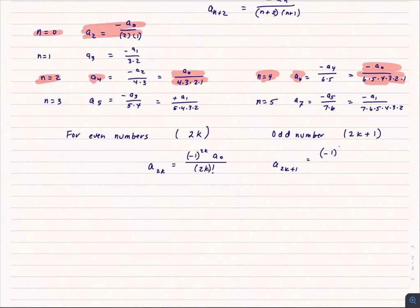So that means y_k is equal to a_0, the summation from, let's switch to k, so we're not mixing up our n's. So k equals 0 to infinity, negative 1 to the 2k, x to the 2k, divided by 2k factorial,